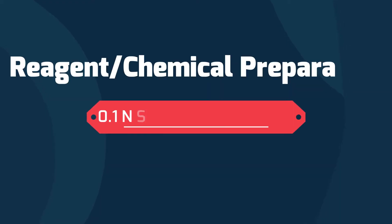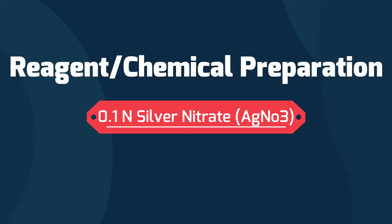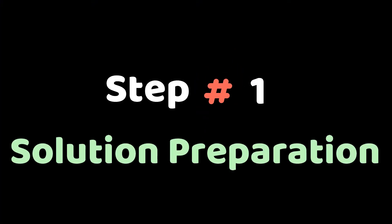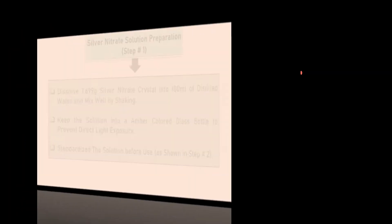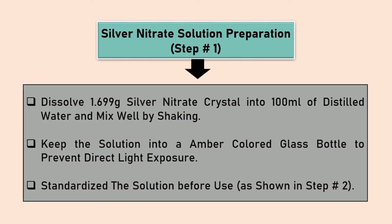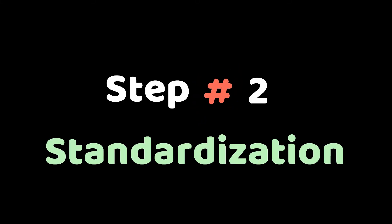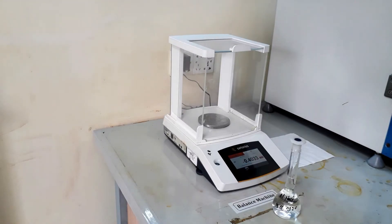Now we will prepare 0.1 normal silver nitrate solution. This can be done by following two steps. In the first step we will prepare the silver nitrate solution by dissolving 1.699 grams of silver nitrate crystal into 100 milliliters of distilled water. Use an amber colored glass bottle to avoid direct sunlight exposure, and always store it in a dark and cool place. In the second step we will do the standardization of the newly prepared silver nitrate solution.